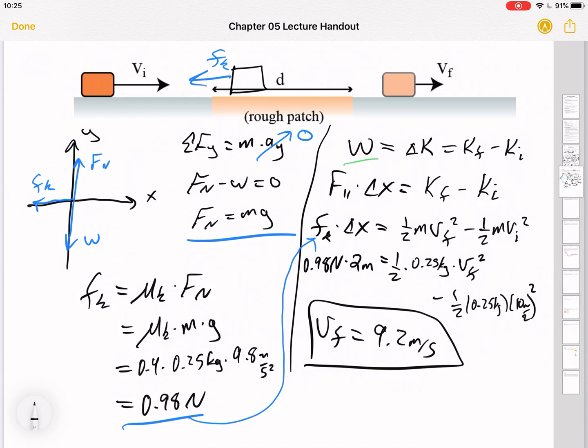So we use the work kinetic energy theorem instead of dynamics and kinematics together. But it makes sense because we got the work kinetic energy theorem by putting dynamics and kinematics together. So it's kind of just a shortcut to use the idea of energy instead of just dynamics and kinematics.